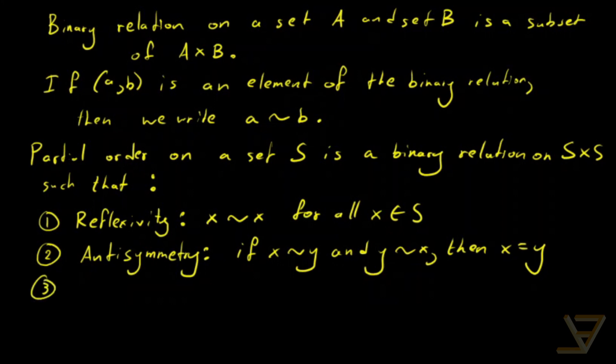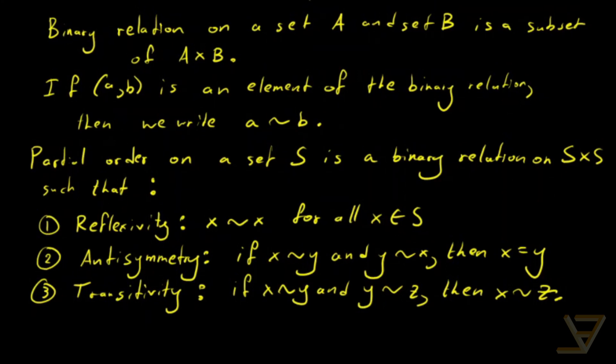And finally we have to have transitivity. So if x tilde y and y tilde z, then x tilde z for all x, y, z in S. So that's what a partial order is.